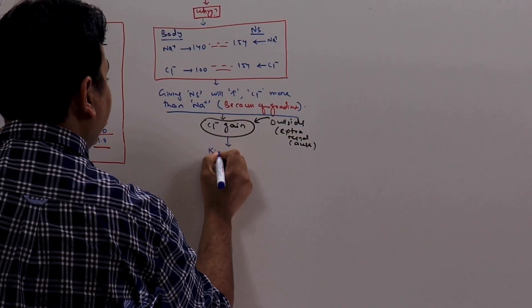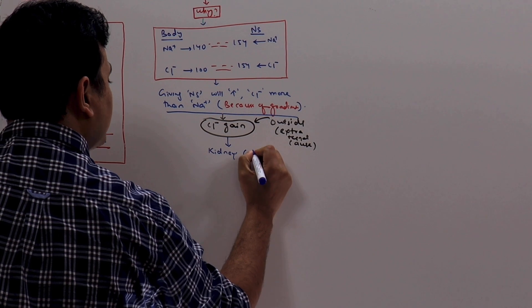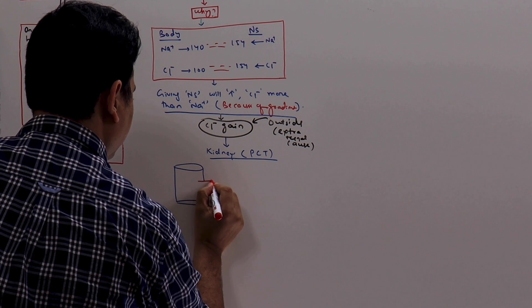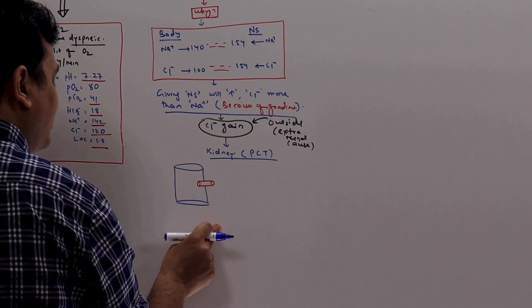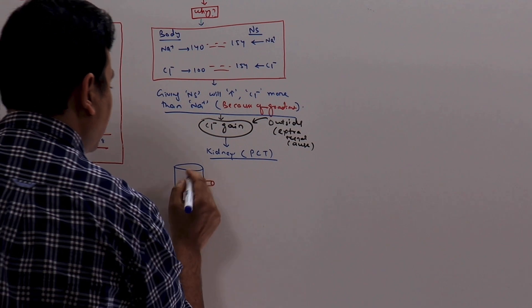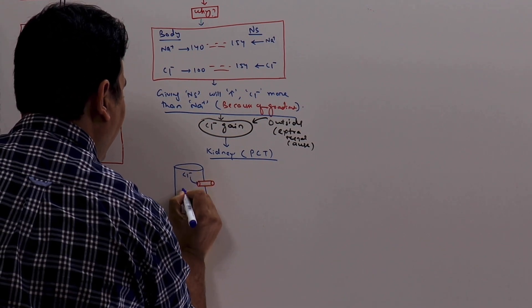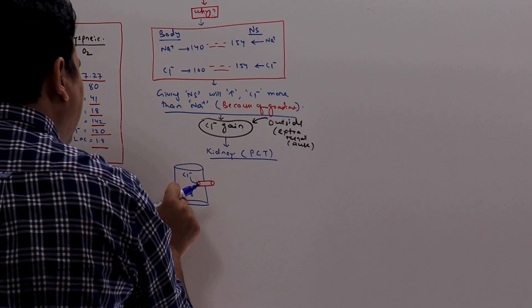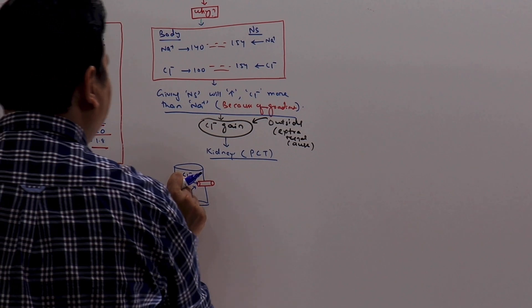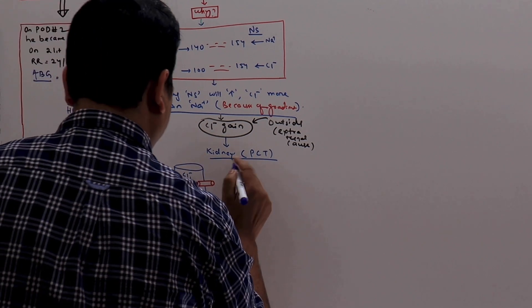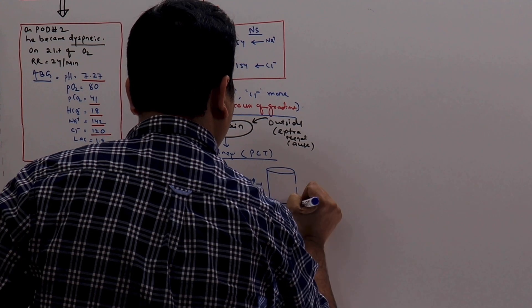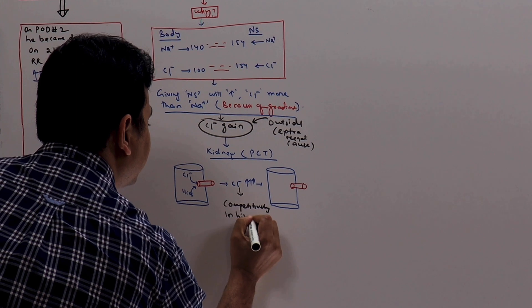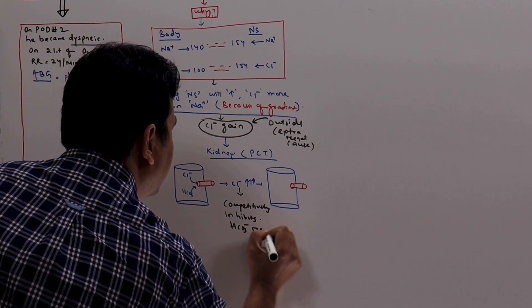What happens in the kidney, especially in the proximal convoluted tubule? In the proximal convoluted tubule, there is a transport system which is common to both chloride and bicarbonate. What happens? When there is chloride excess, it competitively inhibits the bicarbonate and selectively the chloride gets absorbed into the system. When chloride increases, competitively inhibits bicarbonate reabsorption.